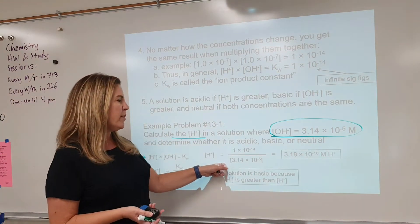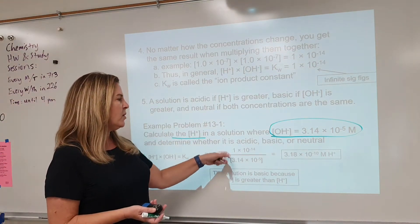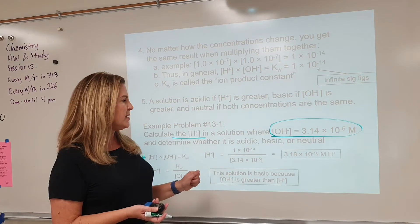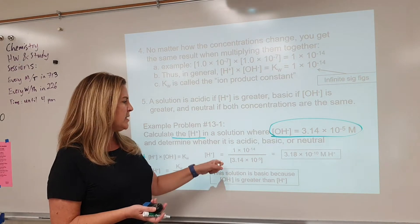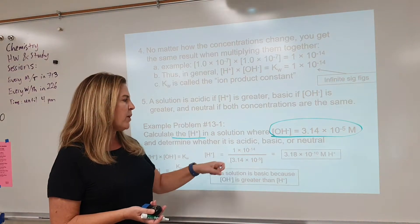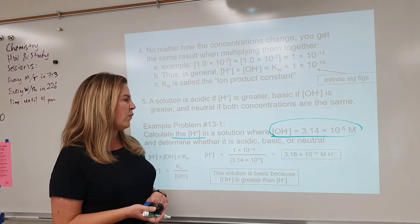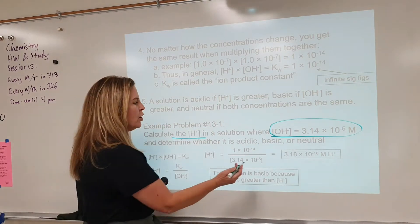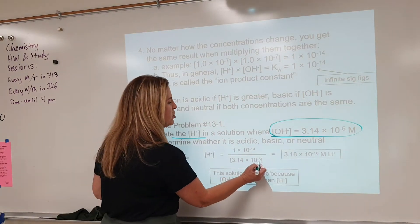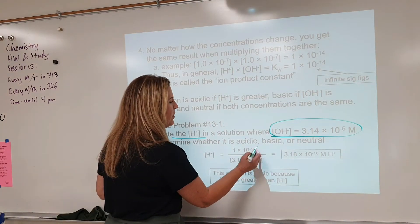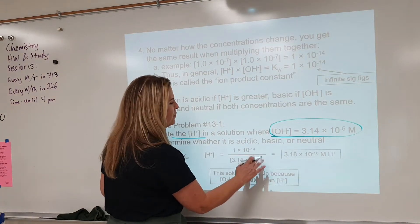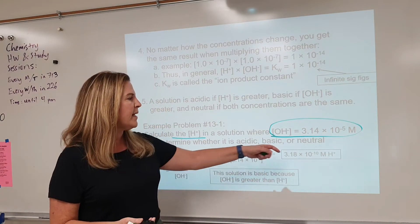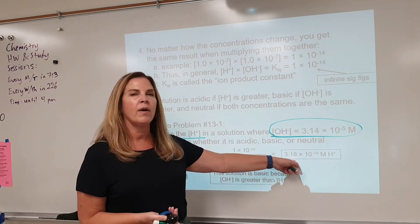We plug that information in: 1 times 10 to the minus 14 — that autoionization constant — divided by 3.14 times 10 to the minus 5. Go ahead and divide that, and we get our answer.